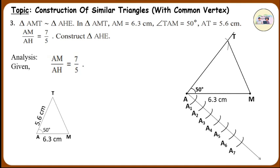Name them as A1, A2, A3, A4, A5, A6, and A7. Join A7 with point M since the ratio is 7 is to 5 and 7 represents the given triangle. Now draw a parallel line to segment MA7. This parallel line meets segment AM — this point is H. Draw a line parallel to side TM from point H. This parallel line will meet segment AT. Mark this point E.